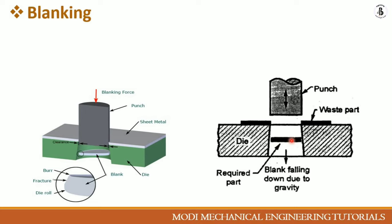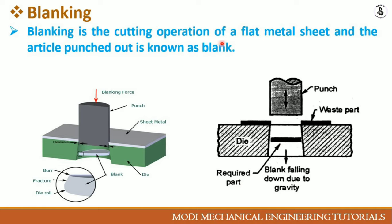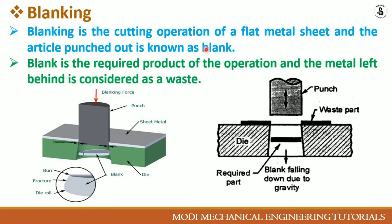Blanking and punching are performed in a similar way, but the key difference depends on the required product. If the cut-out blank is your required part, the operation is called blanking. If the remaining sheet metal is your required part, the cut-out is considered waste and the operation becomes punching. Blanking is the cutting operation of flat metal sheets, and the article punched out is known as the blank — the required product — while the metal left behind is considered waste.